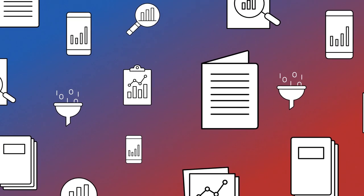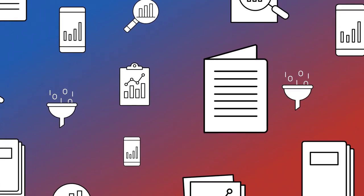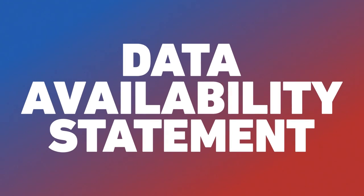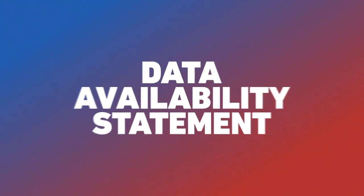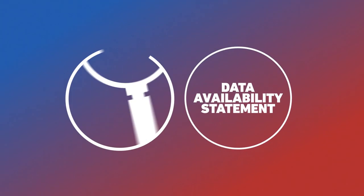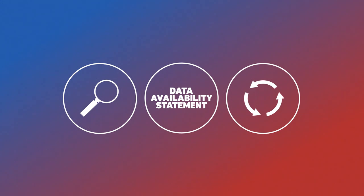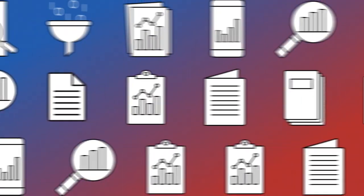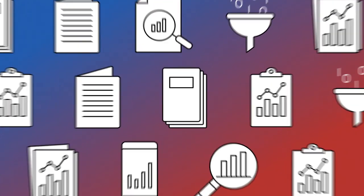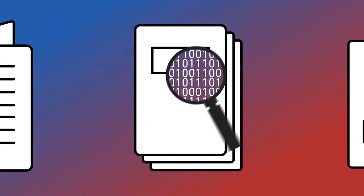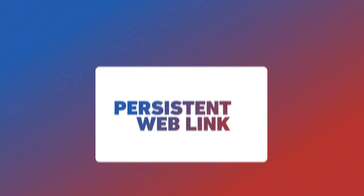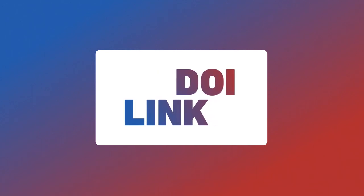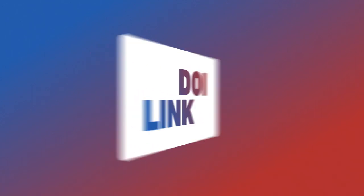When you publish your research results, you need to include a data availability statement in your publication. This statement promotes the visibility and reuse of your FAIR datasets. It indicates the location of the dataset underlying the published research results by providing a persistent web link, such as a DOI link. An example of such a statement might look like this.